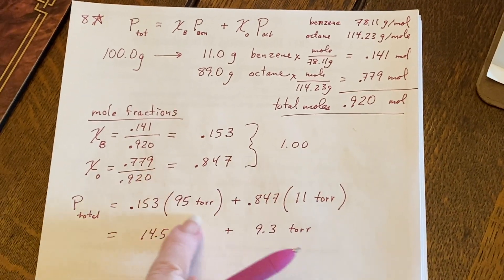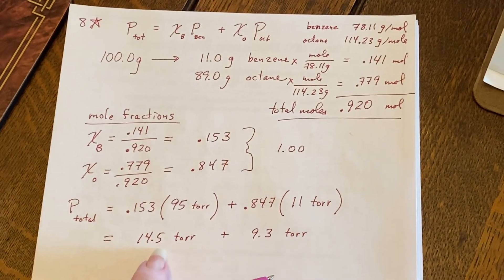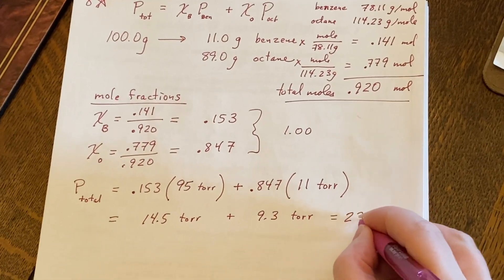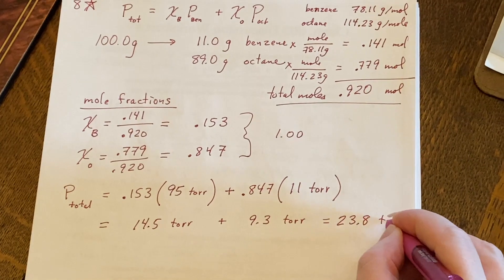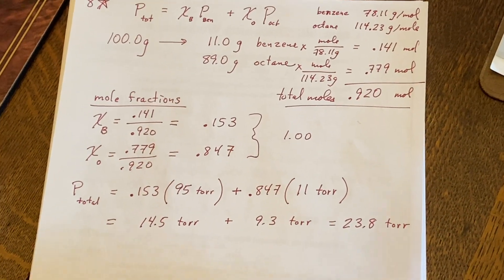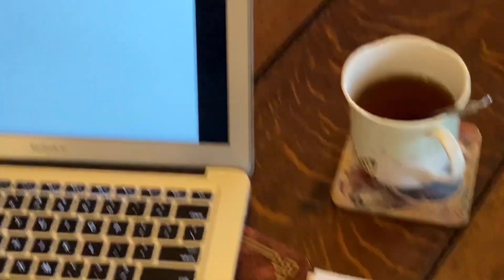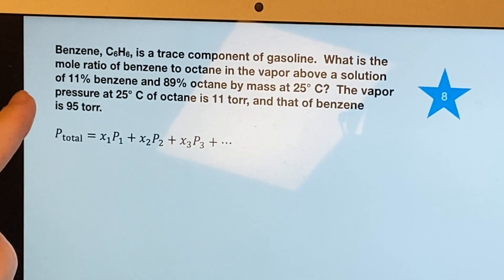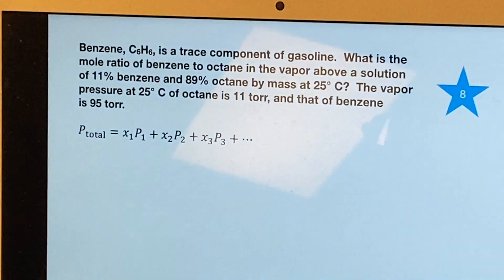If we had been asked what the total vapor pressure was, we would just add these together and get this number. But guess what? That is not what we were asked. We were asked, what's the mole ratio of benzene to octane in the vapor?